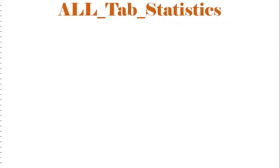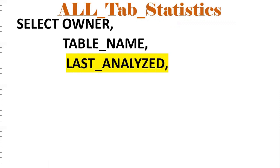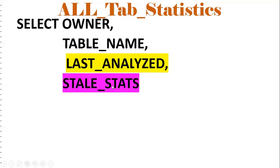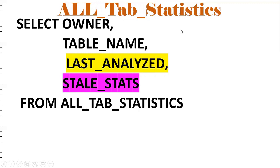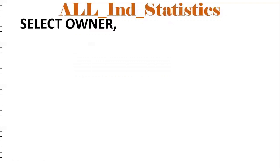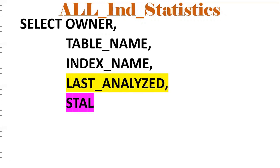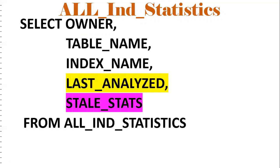For statistics, ALL_TAB_STATISTICS provides the owner, table name, when it was last analyzed, and stale stats — indicating whether the statistics are outdated or current. Similarly, ALL_IND_STATISTICS gives statistics for indexes: owner, table name, index name, last analyzed, and stale stats.